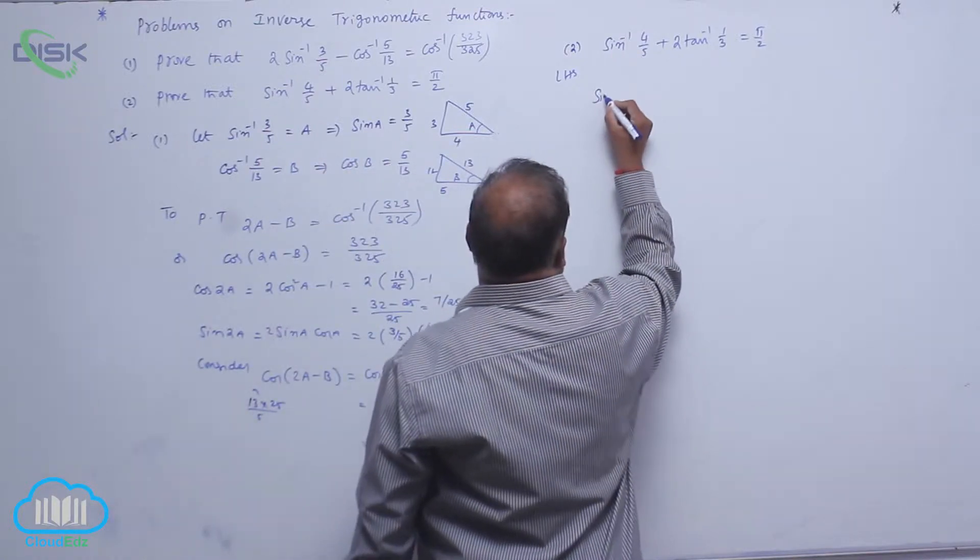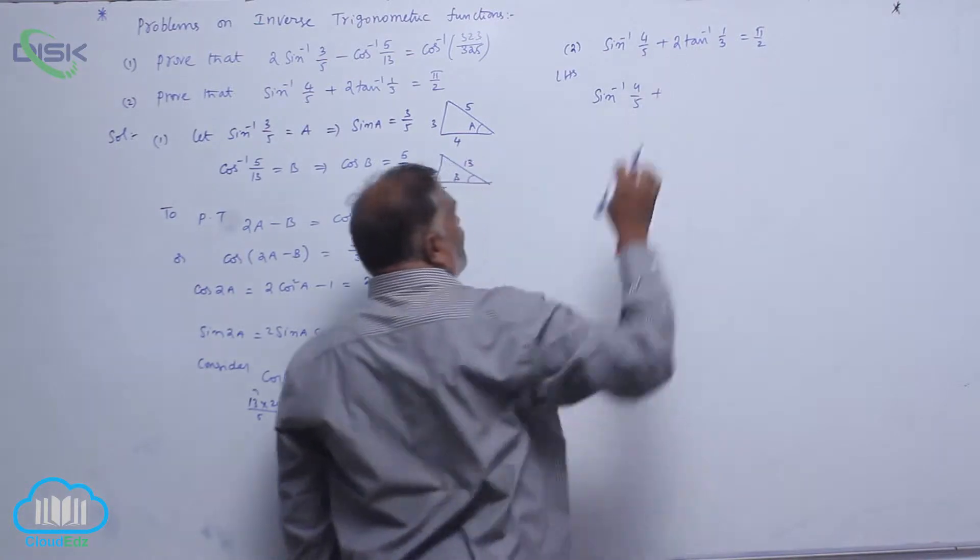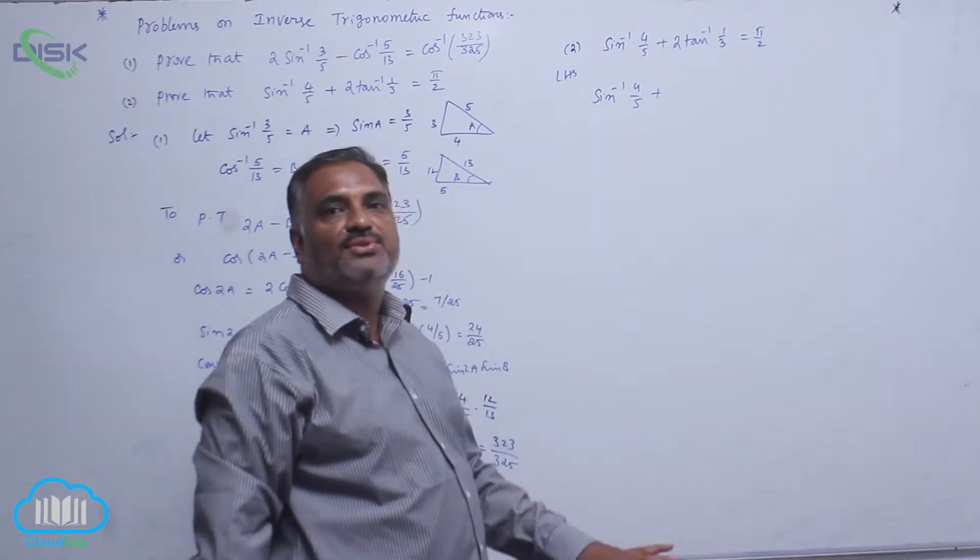LHS part: sin inverse 4 by 5 plus 2 tan inverse 1 by 3, in terms of cos.